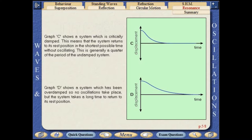Graph D shows a system which has been overdamped so no oscillations take place. But the system takes a long time to return to its rest position.